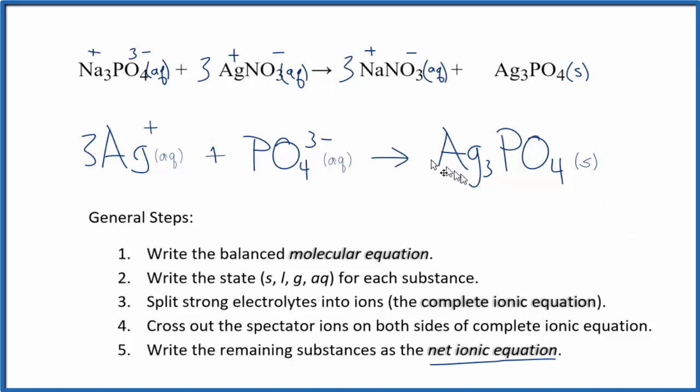So this is the net ionic equation for this sodium phosphate plus silver nitrate, and this is Dr. B.